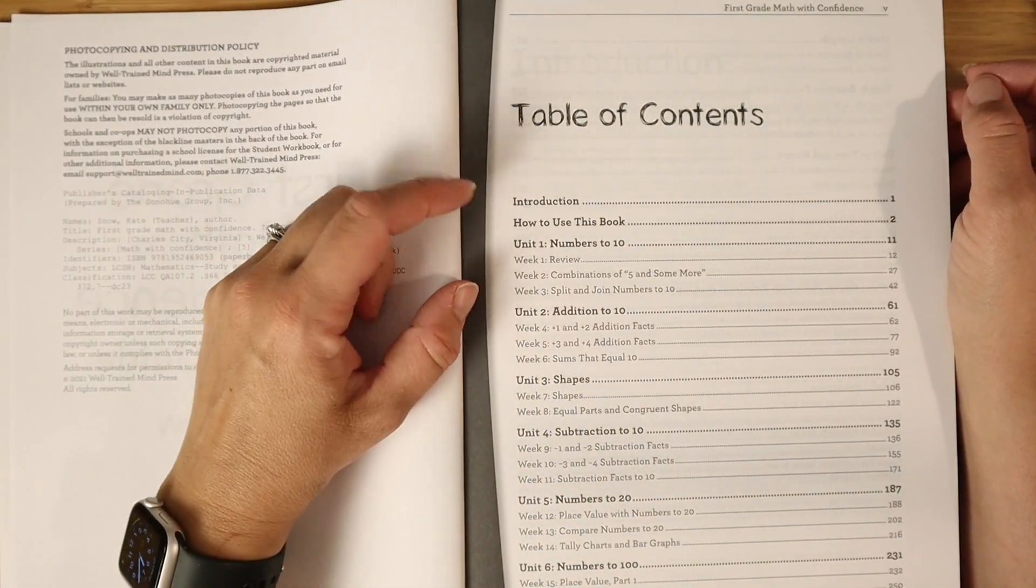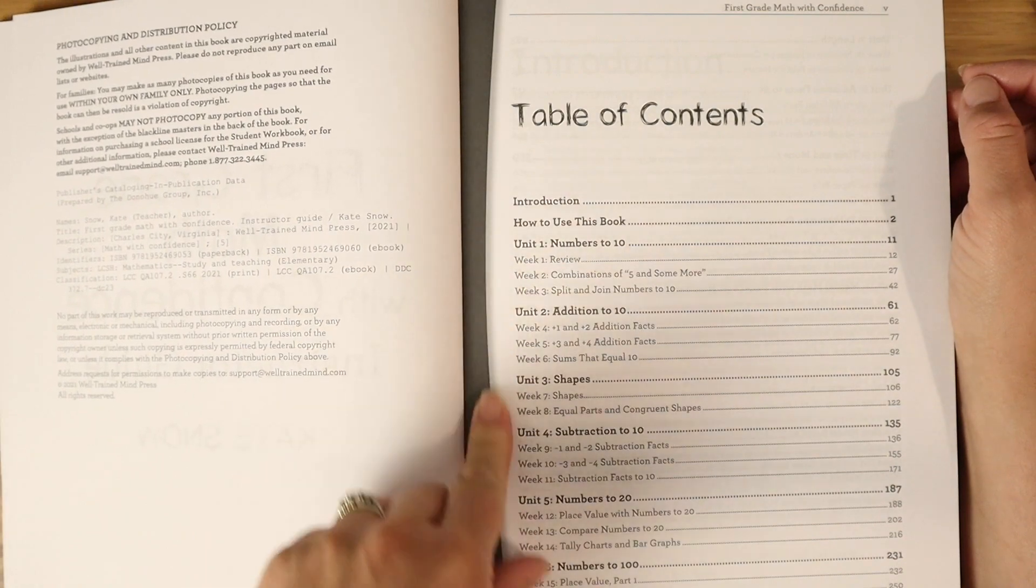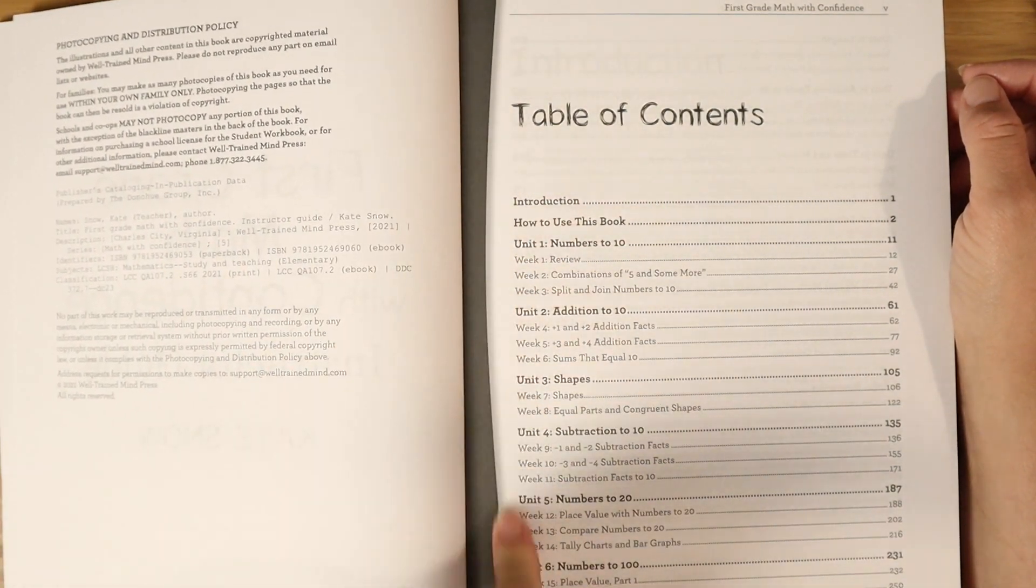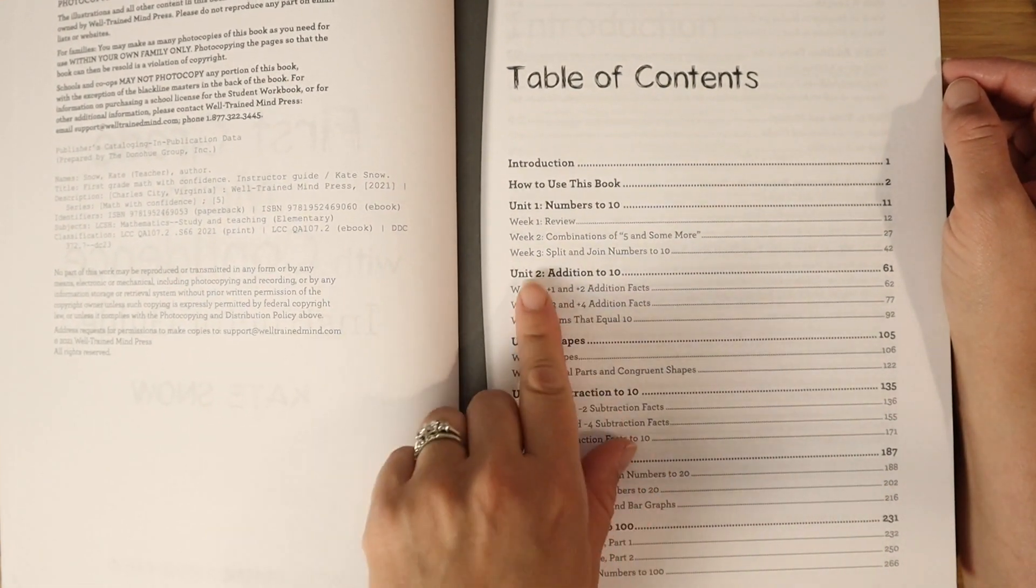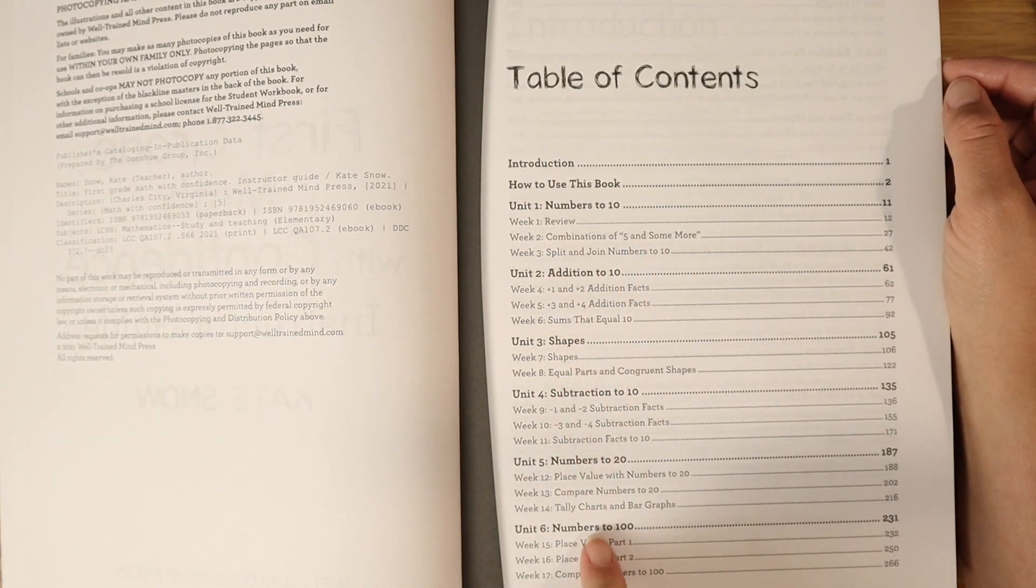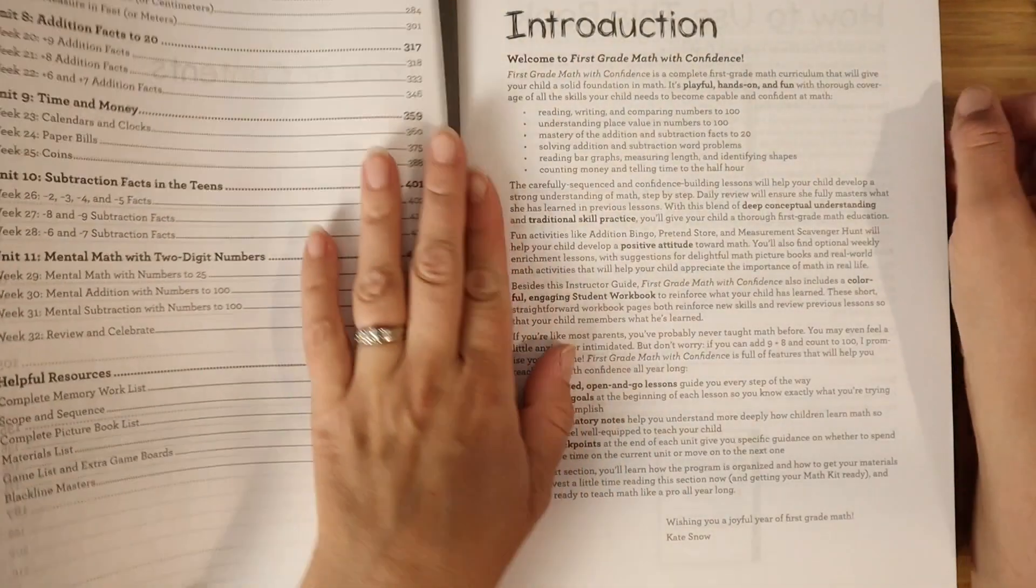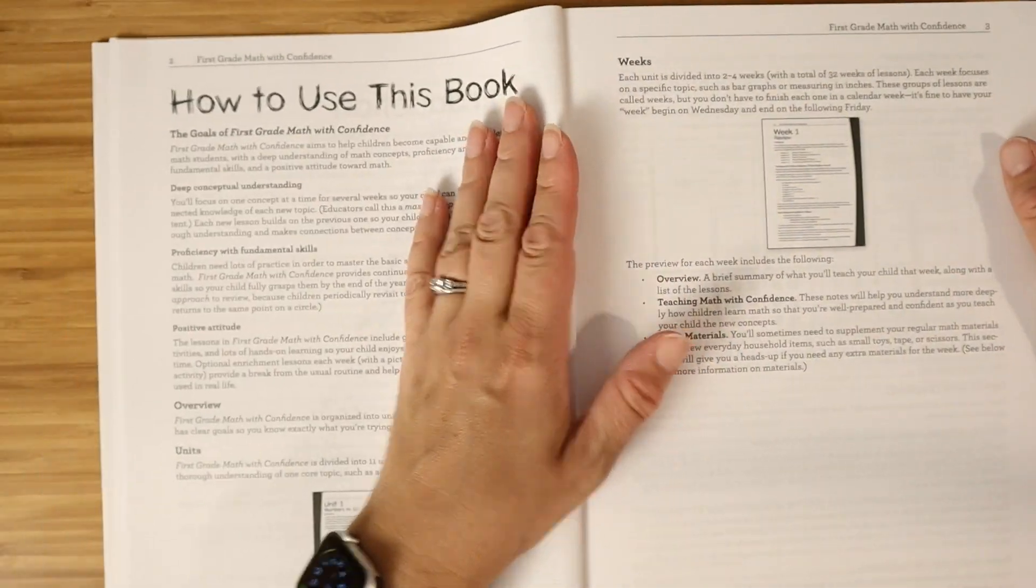Math with Confidence is known for having games, practical application, hands-on lessons, review, and short, quick, and developmentally appropriate lessons. So Table of Contents. We have our introduction. We have the how to use this book. And then kindergarten through second grade are broken up into different units. The different topics covered in first grade include numbers to 10, addition to 10, shapes, subtraction, numbers to 20, numbers to 100, length, addition facts to 20, time and money, subtraction facts in the teens, and then mental math with two-digit numbers.